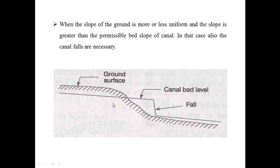When the slope of the ground is more or less uniform but the slope is greater than the permissible bed slope of the canal, as you can see in the figure, in that case also canal falls are necessary.